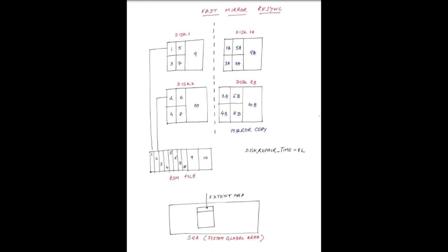The 10th extent is also 4MB in size. This information is mirrored into disk 1A and disk 2B. So we have disk 1A and disk 2B as mirrors. Question: corresponding to extent 9 in disk 1, what is the extent name in disk 1A? The answer is 9A. And corresponding to extent 10 in disk 2, the extent name in disk 2B is 10B.